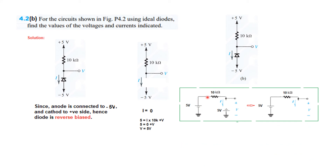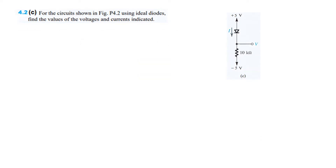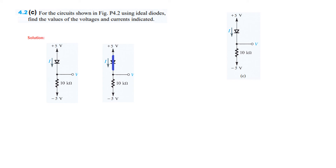You can also draw an equivalent circuit: since nothing is flowing, the voltage will appear across the open circuit, so V will be 5 volt. Now let's see part C. The anode is connected to the positive side and the cathode towards the negative side, therefore this is forward biased. Current is going from positive 5 to negative 5, so I will be 5 minus minus 5 divided by 10K — that is 1 milliampere.